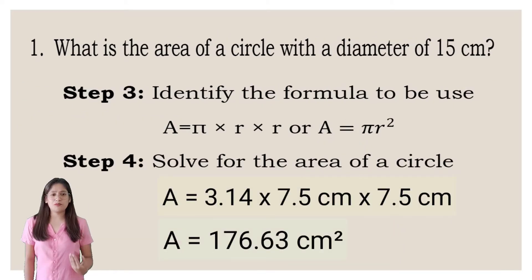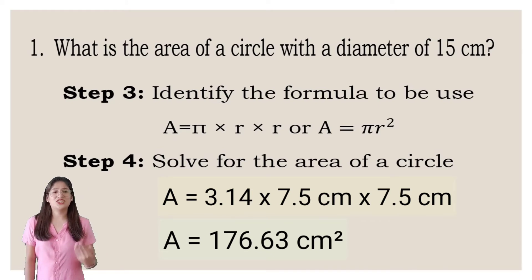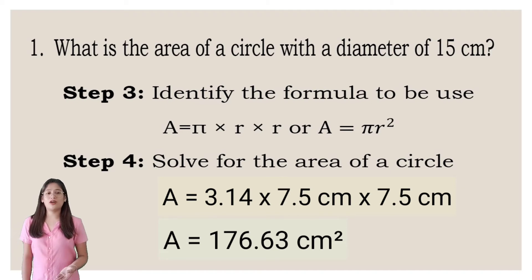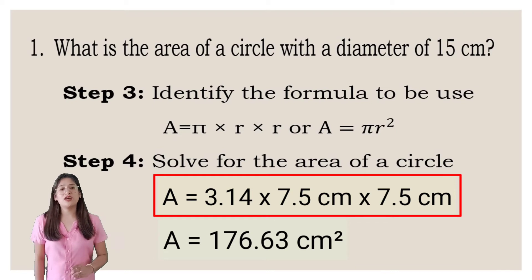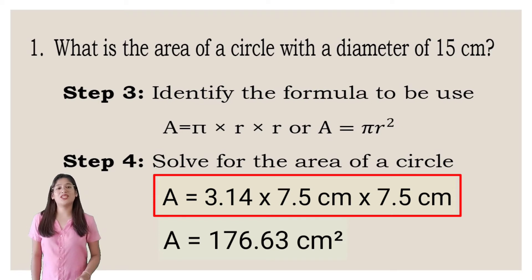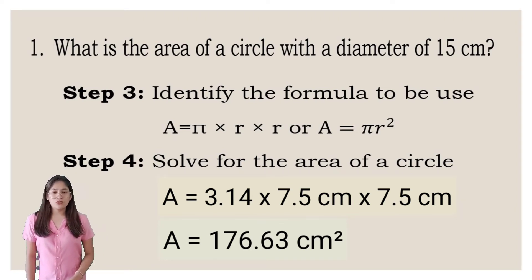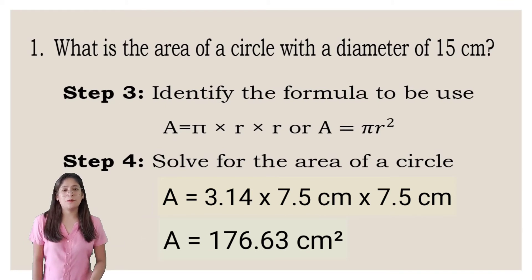Next step, which is step 3: solve for the area of the circle. We have the formula: area is equals to pi r squared. Pi is equivalent to 3.14, multiplied by 7.5, and again multiplied by 7.5 cm. So we will get 176.63 cm squared.